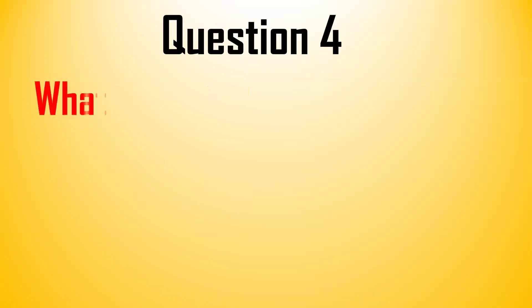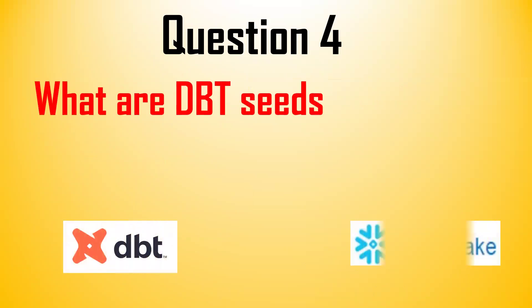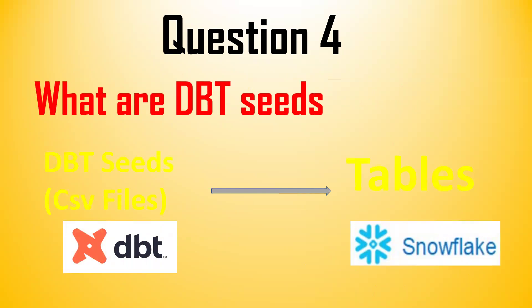The next question is: what are DBT seeds? DBT seeds are nothing but CSV files. They are used for static data and for small volumes of data. When you run seeds, tables will get automatically created in the Snowflake database.